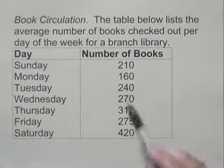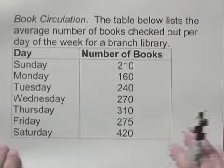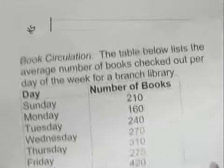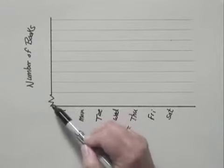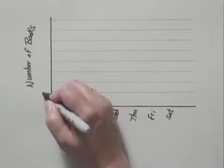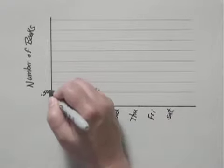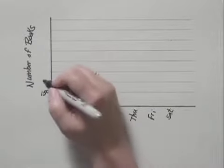We want to represent the numbers between 160 and 420. Our scale needs to cover those numbers, but not much more. That's why I drew this jagged line here - we're going to start counting a little below 160, say 150, and we don't need to show the part of the graph below 150. Let's count by 50s: 150,